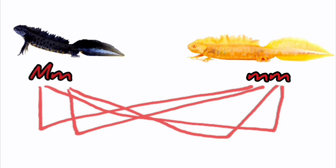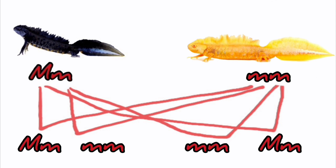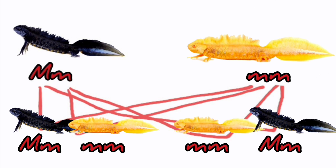If we are breeding these animals and we don't want to produce any normals, we can do this by breeding one het albino to one visual albino or homozygous albino. This will give us a 50-50 split of het albinos and visual albinos. In this pairing, no normal animals are produced, so we can say with 100% certainty that all visually normal animals are het albino. This is sometimes referred to as 100% het.